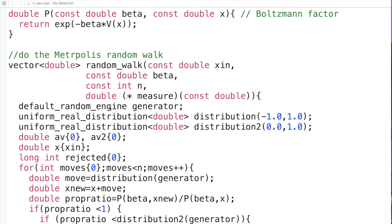Then we have a default random engine generator and we have two uniform real distributions, one of them from minus 1 to 1 and the other from 0 to 1, which is why we're going to define two of these beasts.